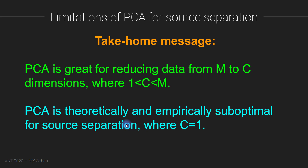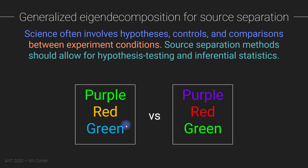Now I'm going to talk about generalized eigen decomposition, which you can see as an extension and improvement over PCA. If you're watching this as a live lecture, this is normally where we'd take a break. In science, we have hypotheses, controls, and comparisons between experimental conditions — so wouldn't it be nice if we had a source separation method that allowed for hypothesis testing and inferential statistics?